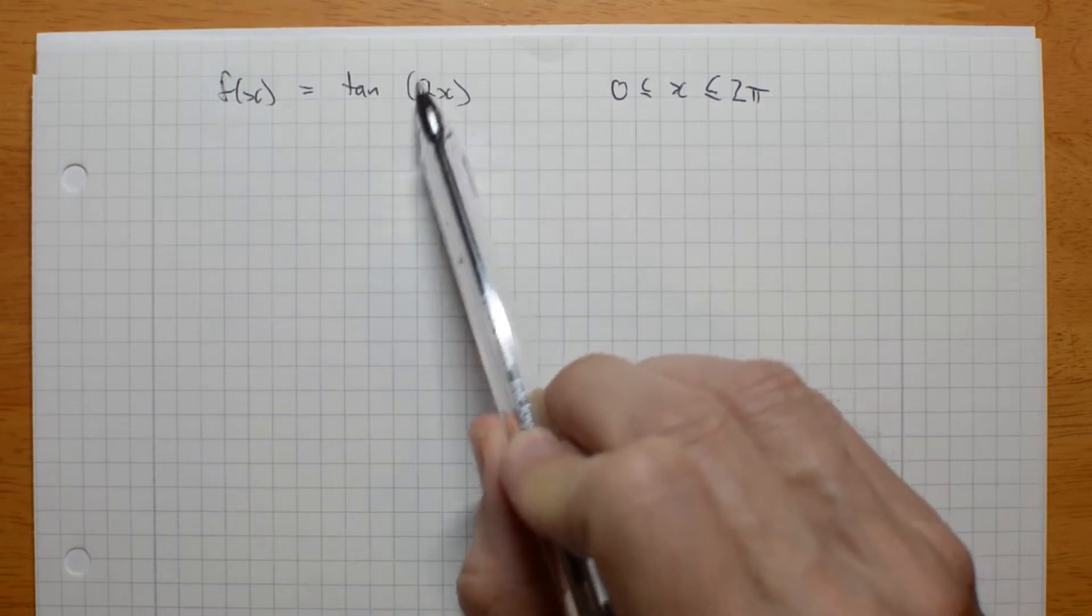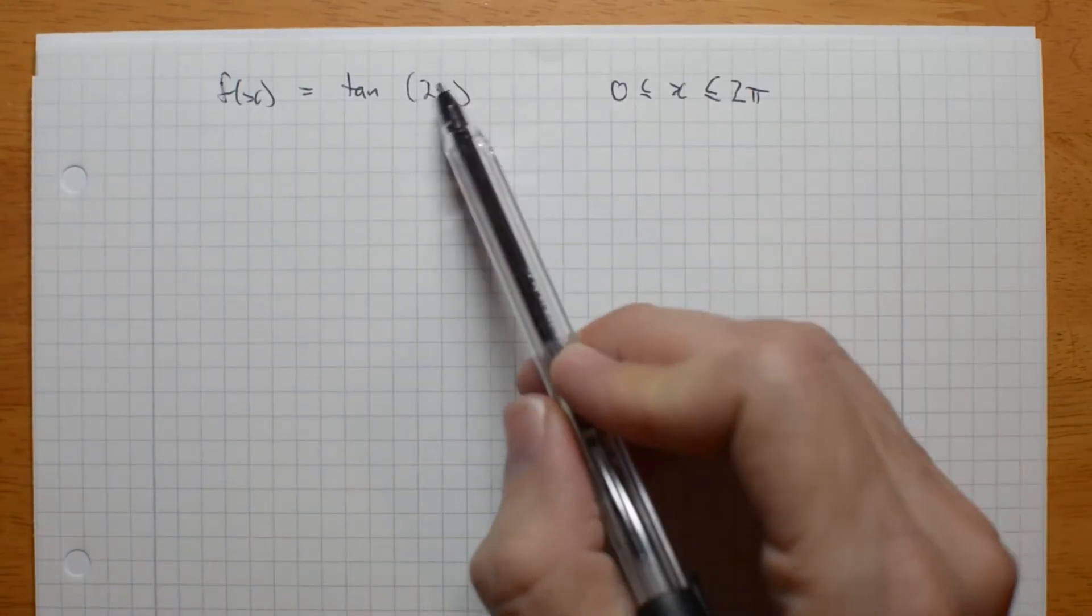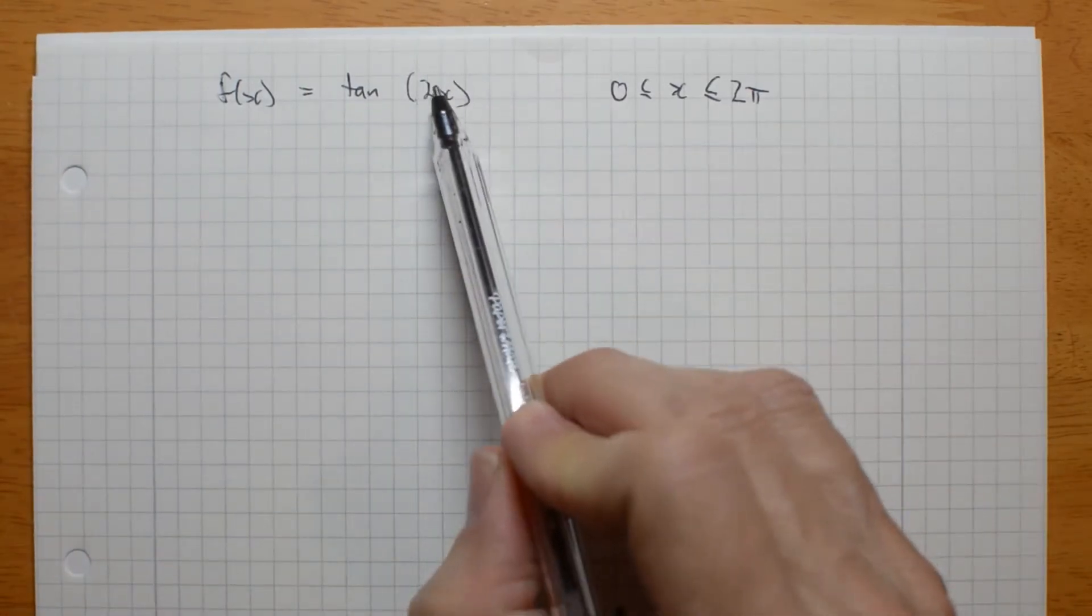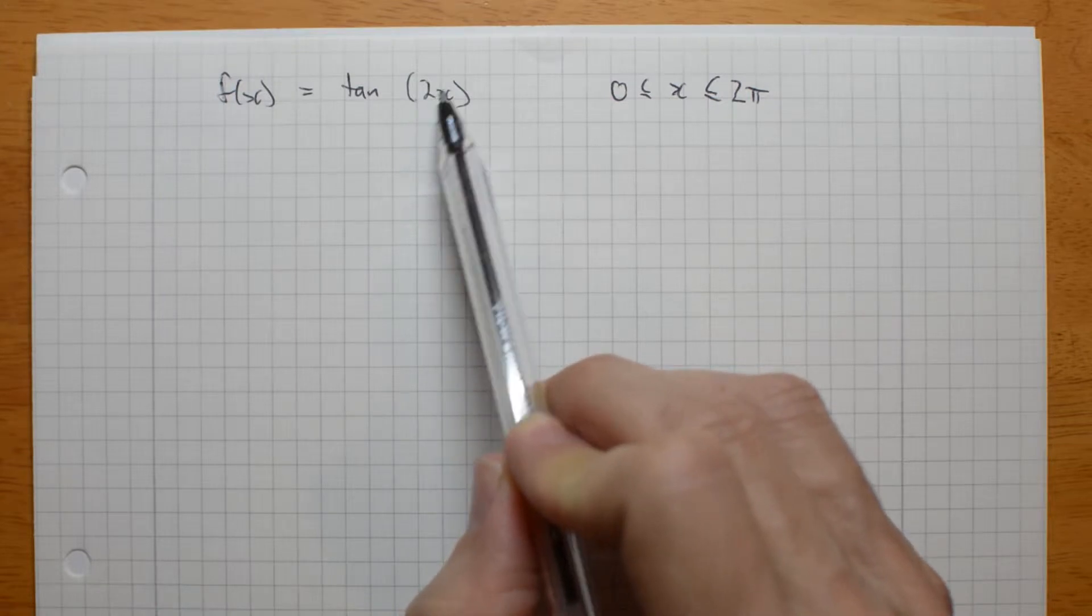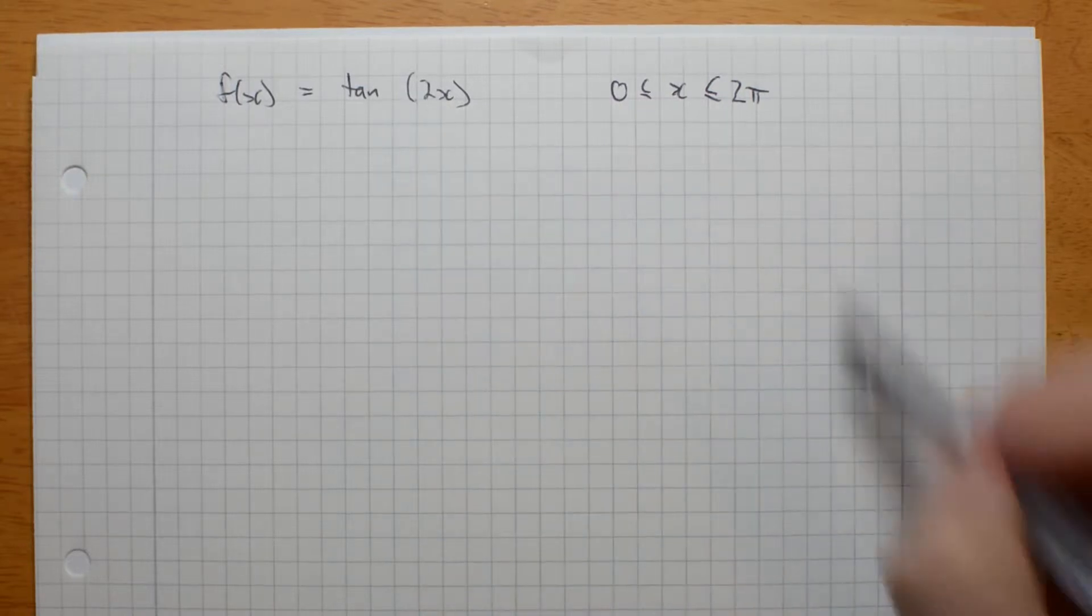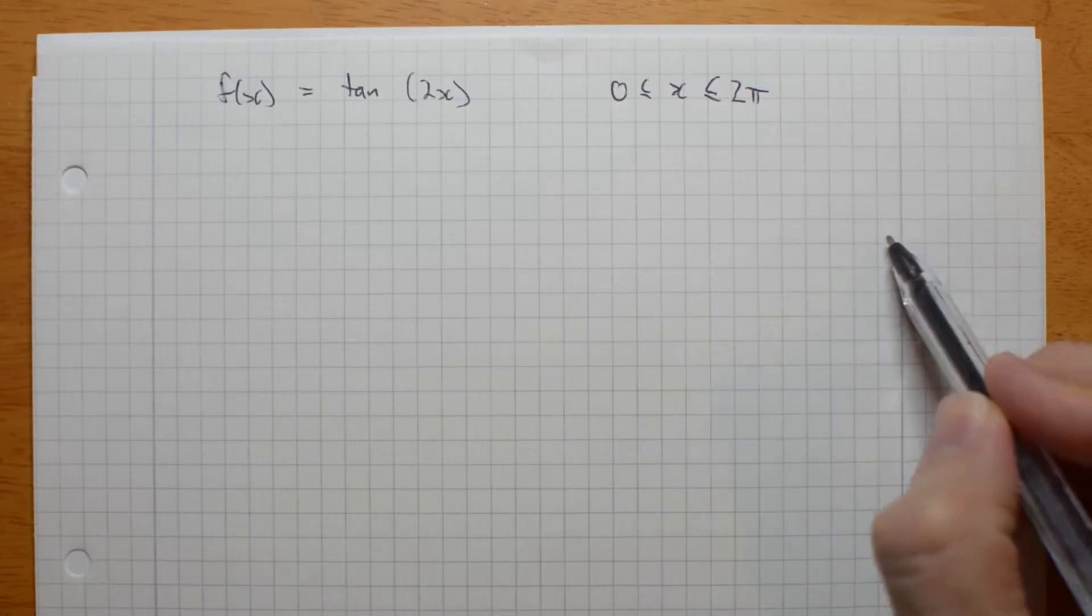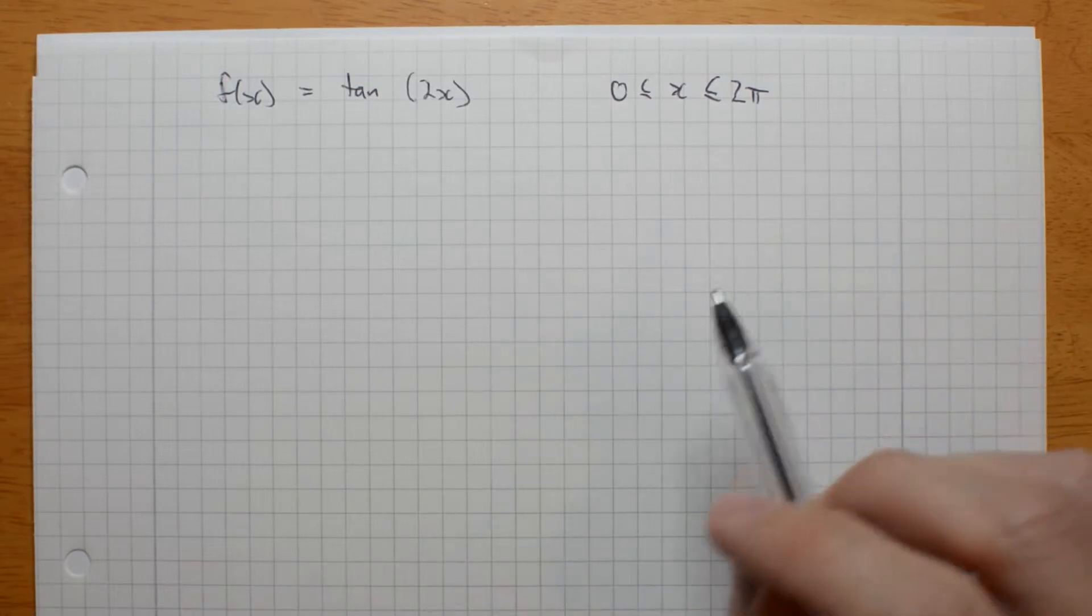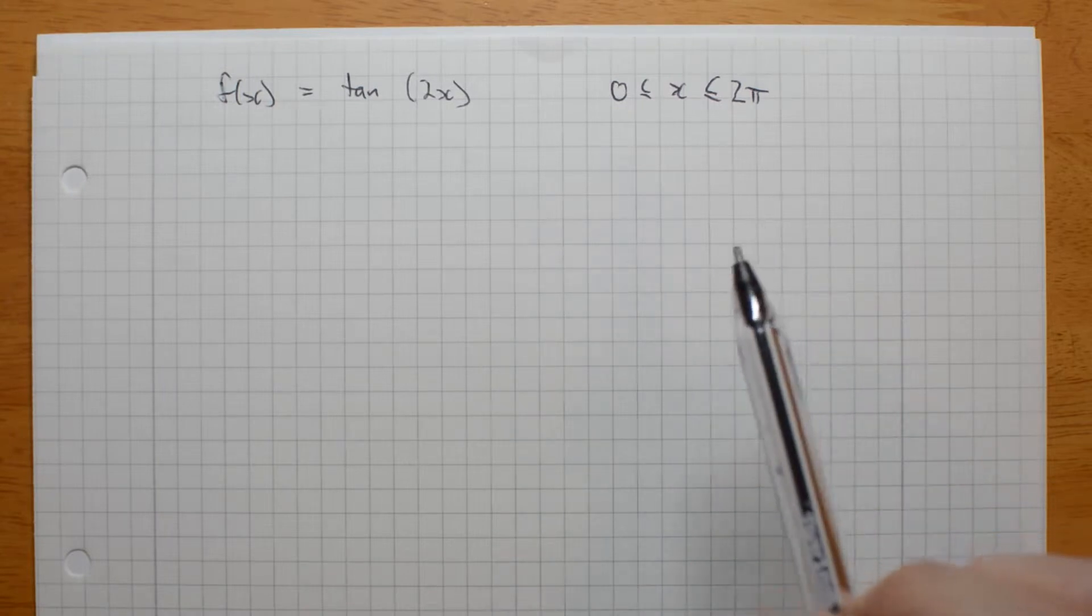There is a number here, which is going to change the horizontal dilation. Just like in sine or cos, this affects the period. Now, the period of a normal tan graph is actually pi. Remember, on the unit circle, it actually repeats every pi radians, every 180 degrees. So, the graph is going to repeat, periodically, every pi, whereas the normal cos and sine graphs repeat every 2 pi.